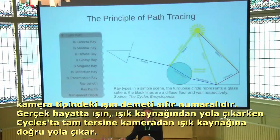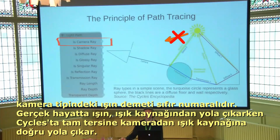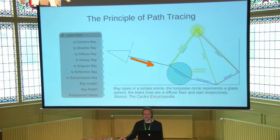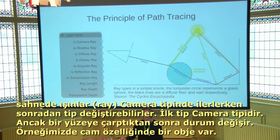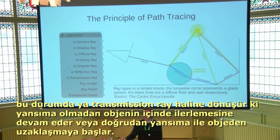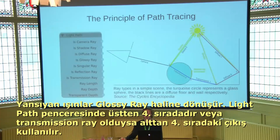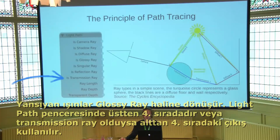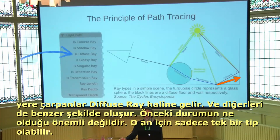You can see the camera ray is actually ray number zero. The ray does not get cast from the light source as it is in real life — it gets cast from the camera. Thereby you can distinguish between different rays originating from the camera. The first ray is always a camera ray until it bounces. It hits an object — this is supposed to be a glass object. At this point it has a chance to become a transmission ray, meaning it goes into the glass sphere, or it gets reflected directly as a glossy ray. After it hits the ground, which is supposed to be diffuse, it becomes a diffuse ray, and so on.